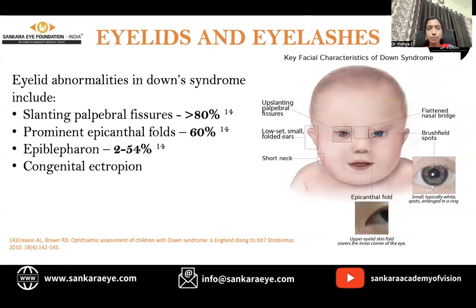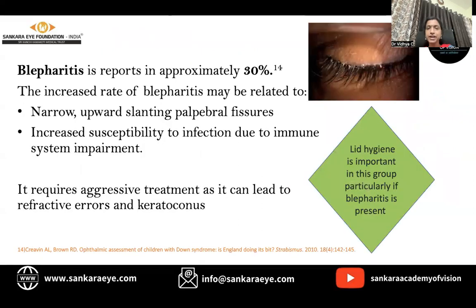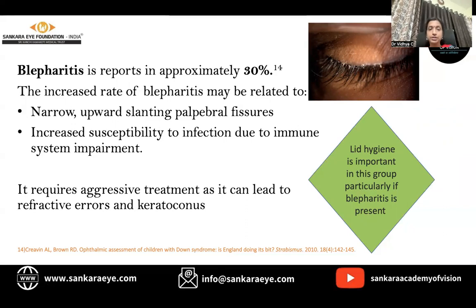Eyelid abnormalities are common in children with Down syndrome, including slanting palpebral fissures, prominent epicanthal folds, epiblepharon, and congenital entropion. Blepharitis is commonly reported in approximately 30%, possibly due to the narrow and upward slanting palpebral fissure and increased susceptibility to infection. It requires aggressive treatment as frequent rubbing can lead to refractive errors and keratoconus. Lid hygiene is very important, particularly if blepharitis is identified.